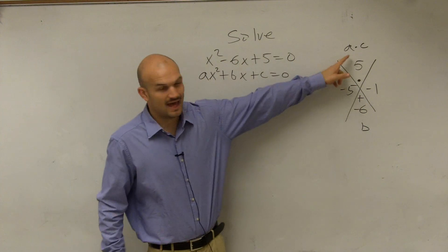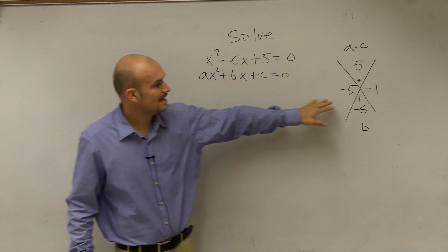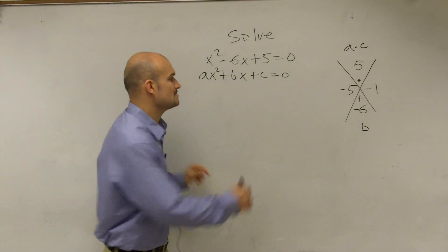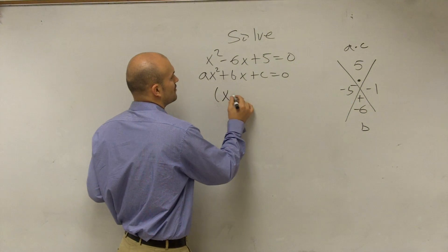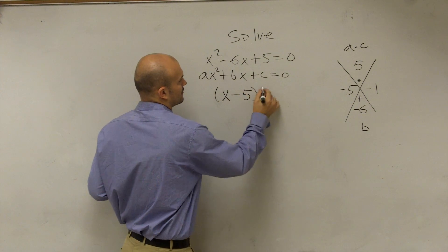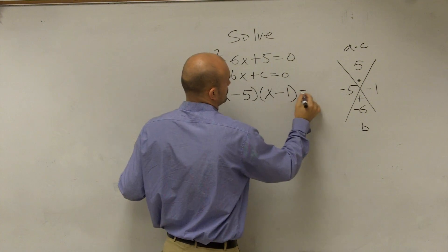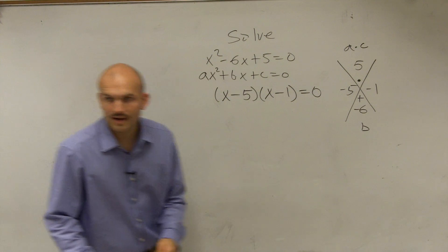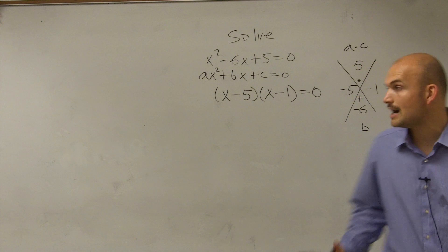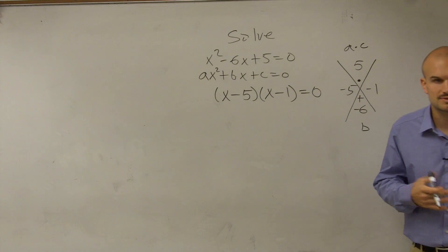Alright. Now, since a is equal to 1, I can use those two numbers as my numbers and my factors. OK? So what I have here is x minus 5 times x minus 1 equals 0.